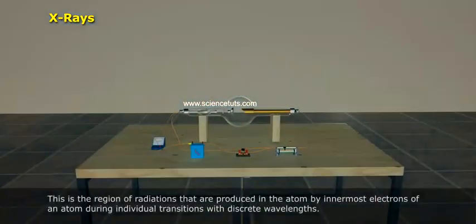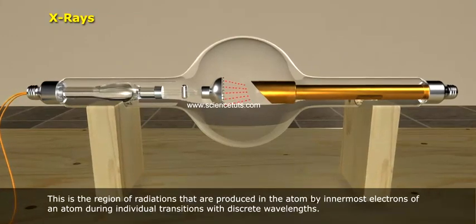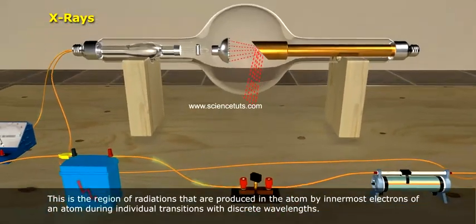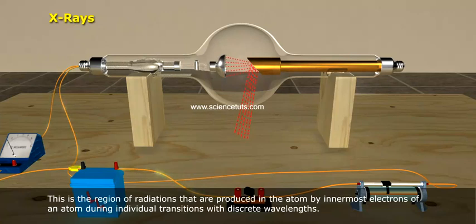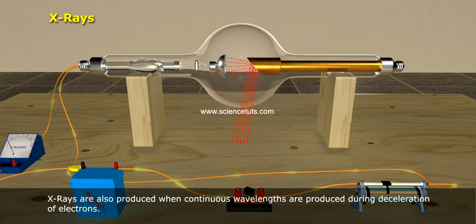X-rays. This is the region of radiations that are produced in the atom by innermost electrons of an atom during individual transitions with discrete wavelengths. X-rays are also produced when continuous wavelengths are produced during deceleration of electrons.